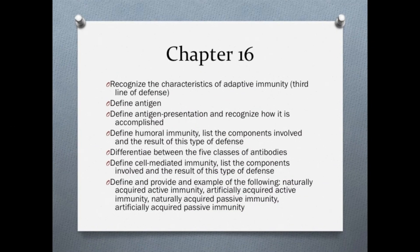Chapter 16 addresses the components and function of adaptive immunity. Students should define antigen and recognize how antigens are processed and presented to cells of the third line of defense. You should differentiate between humoral and cell-mediated immunity. You will need to recognize which cells are employed in each and how the cells are responding. For example, humoral immunity, also known as antibody-mediated immunity, is the function of the B cell, which, when stimulated by an antigen, differentiates into memory cells and plasma cells. Plasma cells then produce antibodies which work in a variety of ways to assist in the destruction of the pathogen.